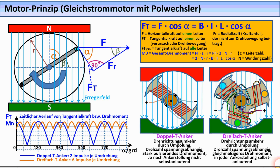Verwendet man als Rotor eine Spule mit Eisenkern, so wechseln die Pole nach jedem Polwechsel. Weil sich gleichartige Pole abstoßen und ungleichartige anziehen, kommt eine fortlaufende Drehbewegung zustande. Die auf den Rotor wirkende Tangentialkraft hat je Umdrehung zwei Höchstwerte, sodass der Motor einen relativ unruhigen Lauf hat, vergleichbar etwa mit einem Zweitakt-Benzinmotor. Je mehr Pole der Rotor hat, umso ruhiger ist der Lauf und umso gleichmäßiger ist das Drehmoment, wie zum Beispiel bei einem Dreifach-T-Anker. Anker ist eine andere Bezeichnung für Rotor, insbesondere bei Gleichstrommotoren.